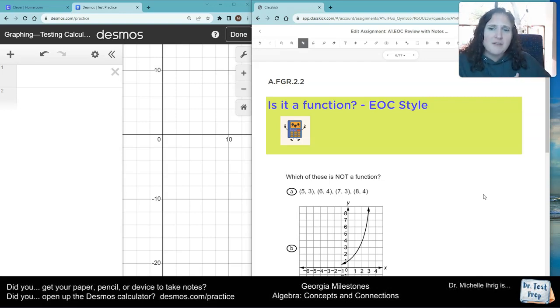Remember the way that we can tell if something is a function is we want to make sure that the x values have no duplicates. We also want to make sure it can pass the vertical line test.